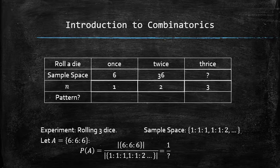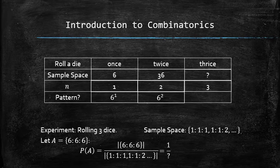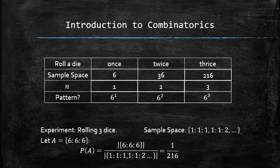The pattern appears to be straightforward. The sample space size for rolling 1 die is 6 raised to the power 1. The sample space size for rolling 2 dice is 6 raised to the power 2. So the formula for 3 dice is 6 raised to the power 3, which is 216. Therefore, the probability from the previous example is 1 over 216.